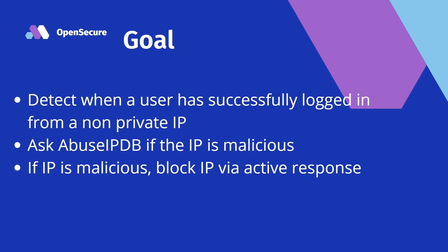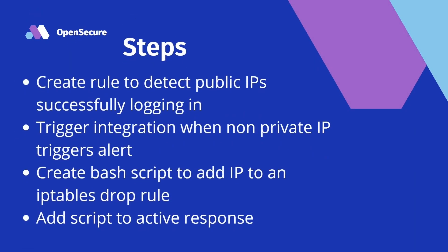We're going to detect if an IP is malicious — so if AbuseIPDB responds back with a confidence score indicating an IP is malicious, we're then going to trigger a bash script via active response. It's going to create an iptables rule for that IP address that successfully logged into the box, which would ultimately lock the user out from being able to interact with the server at all.